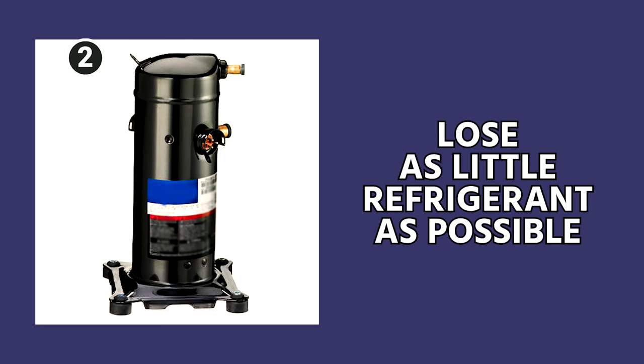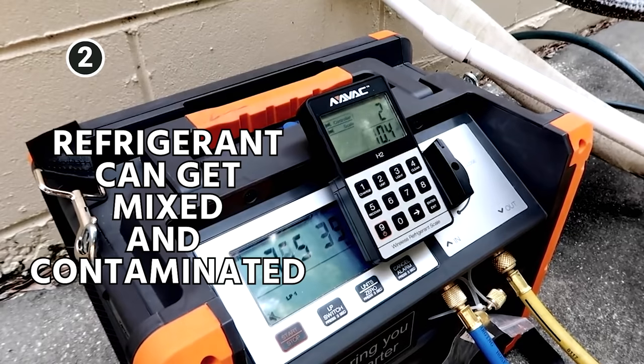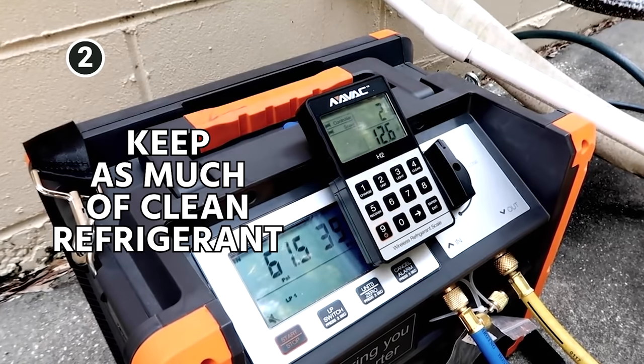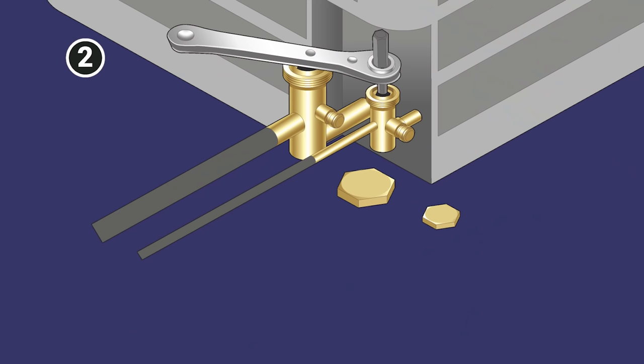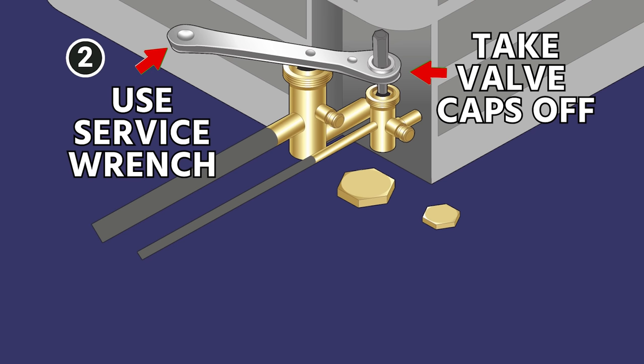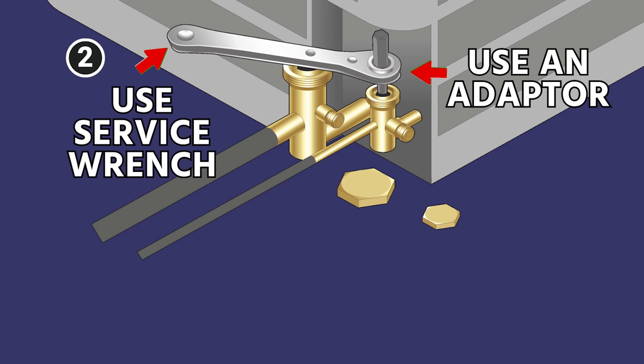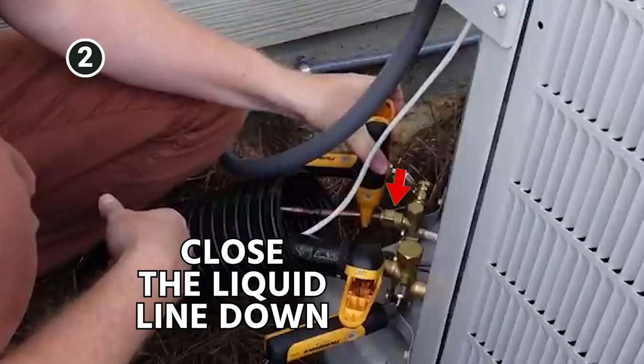So that way you lose as little refrigerant as possible. Because as you know, even when you put some into the recovery machine, that last little bit of refrigerant can easily get mixed and contaminated. So you really want to keep as much of that clean refrigerant in the system as possible for cost savings. What you're going to do is take your valve caps off, use your service wrench and usually just use a little adapter or another hex key, and close the liquid line down.